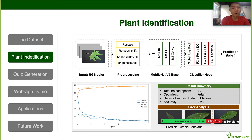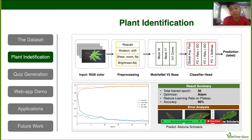After training for 30 epochs, I got a 96% accuracy score using the Adam optimizer. For the error analysis, as you can see, the app was confused when it comes to leaves which are very small or leaves which have several defects on them.